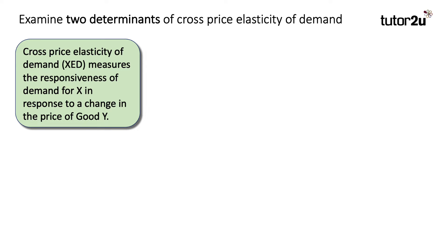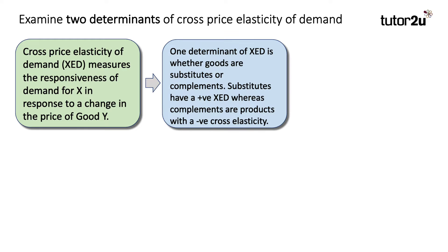Let's work through a couple of answers here. To start with the definition: cross price elasticity measures the responsiveness of demand for good X in response to a change in the price of a related good, in this case good Y. One determinant of XED, or cross price elasticity, is whether goods are substitutes or complements.